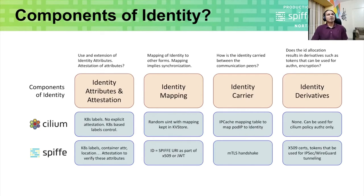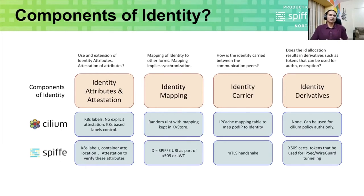I need to compare at a high level the components of identity and how Cilium identity and SPIFFE identity differ fundamentally, then I'll go into the integration details and challenges. Identity attributes and attestation is the first component of any identity solution. In case of Cilium, Kubernetes labels are made use of — there is no explicit attestation procedure. The Kubernetes control plane itself takes care of Kubernetes labels management, and that is essentially leveraged by Cilium as well.